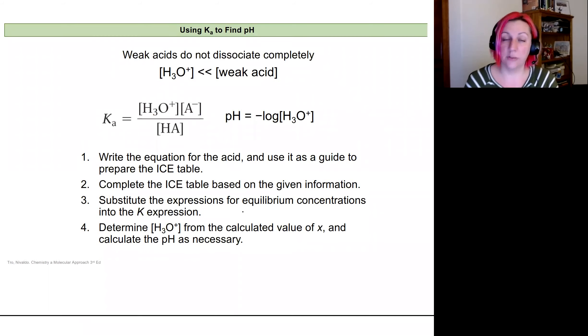So while strong acids are really straightforward, weak acids are not. So remember, a weak acid is going to have an equilibrium constant less than 1. So our reactants are going to be favored.